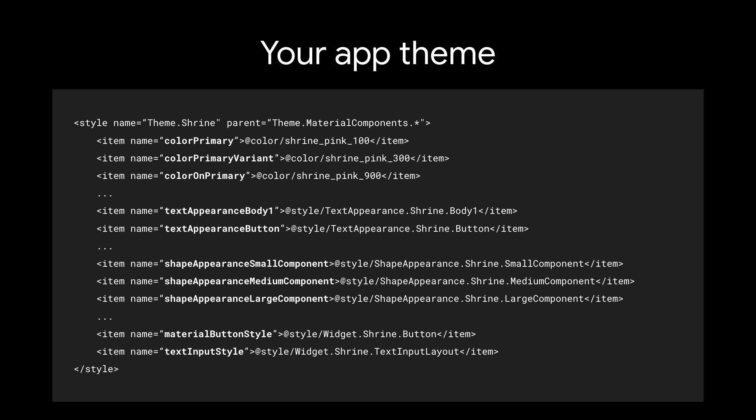That was a quick look at how to migrate from the Design Support Library to Material Components. With the new and updated material theming and widget attributes, your app theme should now look something like this. You can learn more about material theming and MDC Android at material.io. If you enjoyed this video, give it a like and subscribe to our channel for more design tutorials and other videos. Thanks for watching.